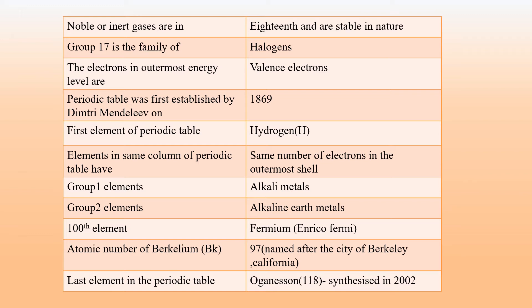Group 2 elements are known as alkaline earth metals. Alkaline earth metals are metals that easily react with other elements and form compounds, which are found in nature. The 100th element on the Periodic Table is Fermium, named after Enrico Fermi, an Italian physicist and creator of the world's first nuclear reactor and architect of the atomic bomb.